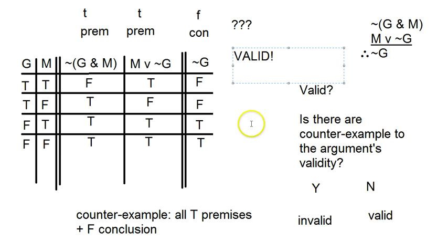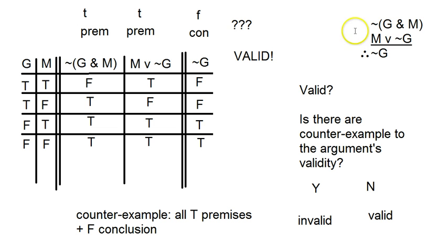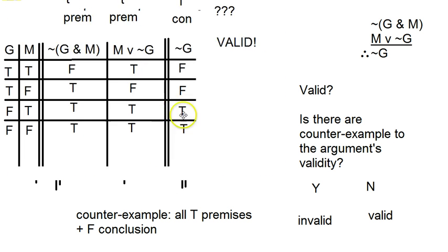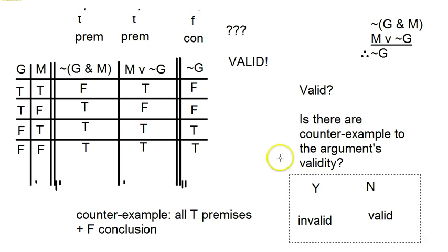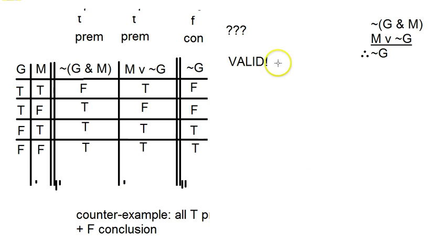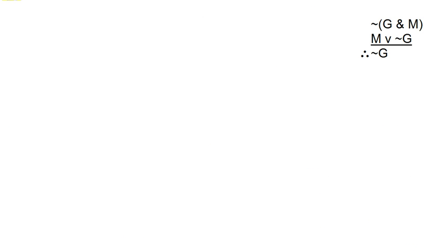So we just did one problem. That would be your final answer. If I give you this problem and ask you to tell me if it's valid or invalid using a truth table, your answer would look like this — the completed truth table plus a statement of validity. Let's do at least a couple more before this video is done.